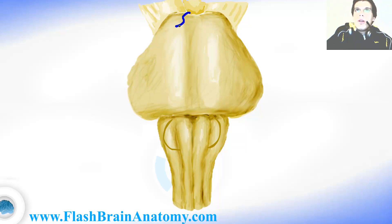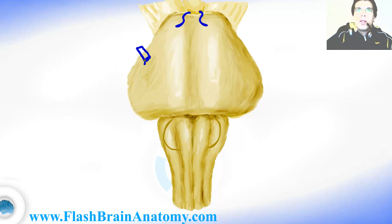We can find one nerve over here in the interpeduncular fossa. It is called the oculomotor nerve. Here we can find the trigeminal nerve, and the same on the other side. We can also find the motor root of the trigeminal nerve, and the same on the other side.